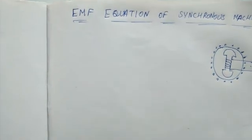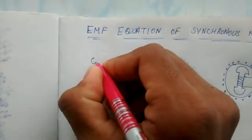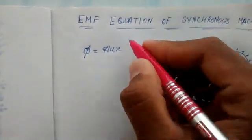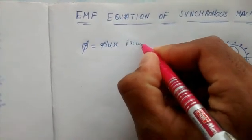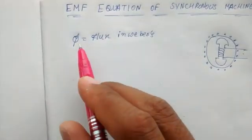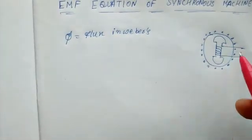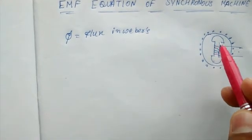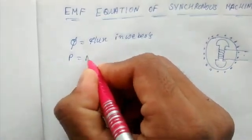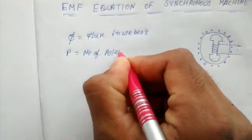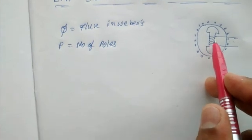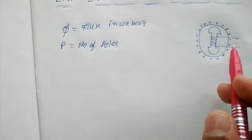So, we have flux linking the armature. We call the poles: P is equal to number of poles. Next, we call it a winding — we call it a field winding and armature winding. We call it the MMF produced.